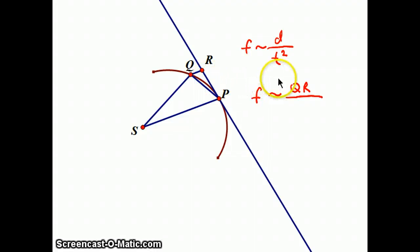So the force is proportional to QR over time squared, which is going to be QR over the area of triangle QSP squared.